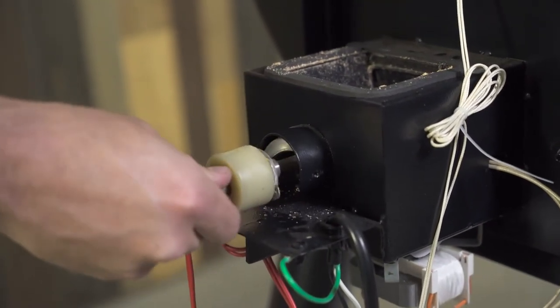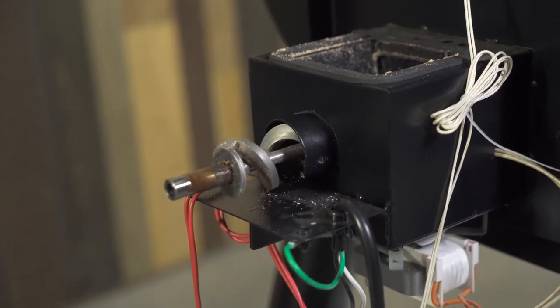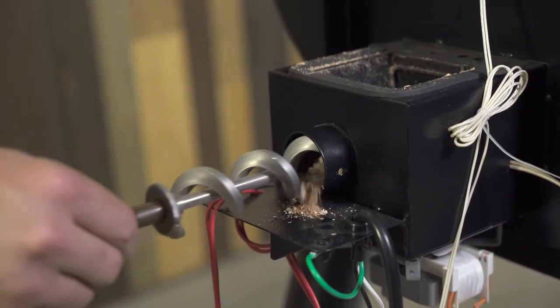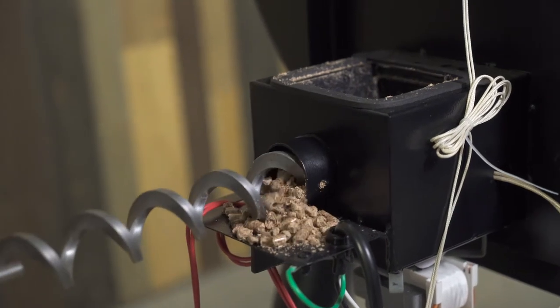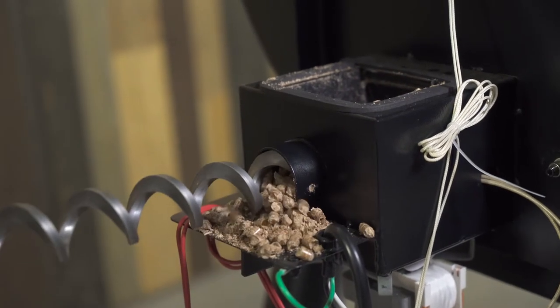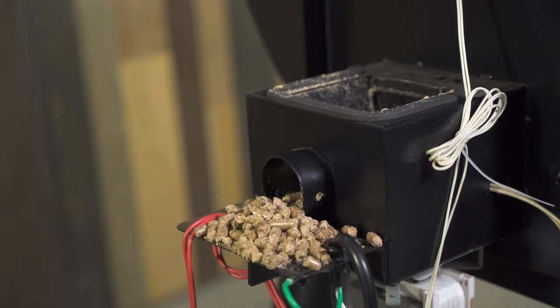Remove the auger from the auger shaft. Turn the shaft counterclockwise to help wheel it out towards you. Sometimes it's hard to turn at first. Once the auger breaks free, it should turn very easily.